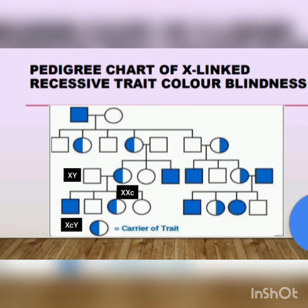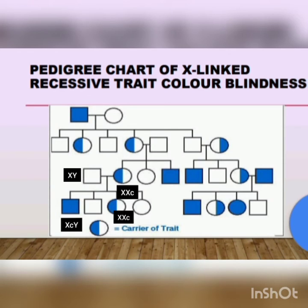Pedigree chart of X-linked recessive trait colorblindness. Here, we can see that the male, represented by a square box in the parent generation, is carrying the gene XY, whereas the female, represented by a circle, is carrying the defective gene X with superscript C and acts as a carrier. Their son gets one defective X-chromosome from his mother and is colorblind.